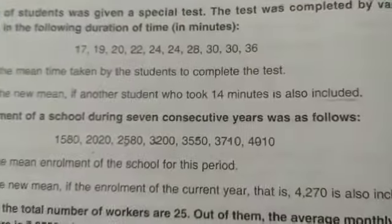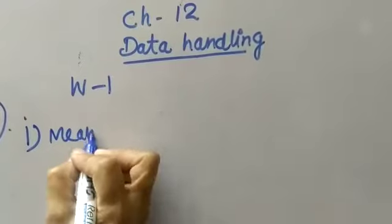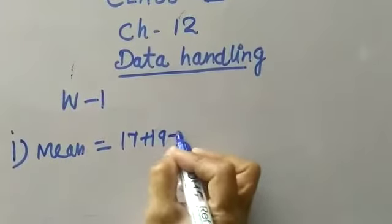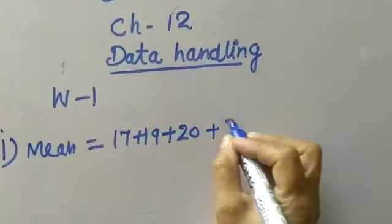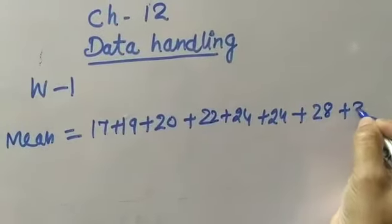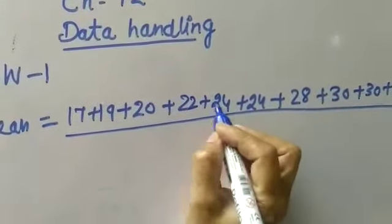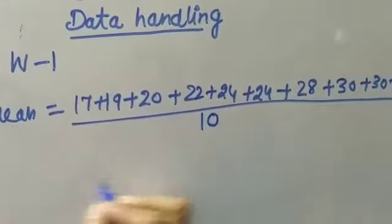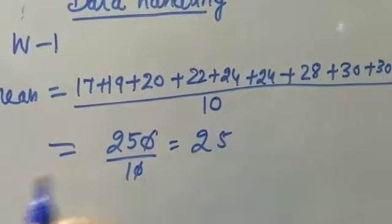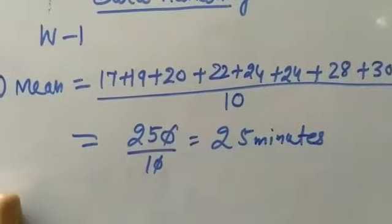Duration of time in which test was completed. You have to find the mean time taken by students to complete the test. Given: 17 plus 19 plus 20 plus 22 plus 24 plus 24 plus 28 plus 30 plus 30 plus 36. Count how many numbers - 1, 2, 3, 4, 5, 6, 7, 8, 9, 10. Total numbers are 10. Adding these, you get 250 upon 10. After cutting, you will get 25 minutes. Average is 25 minutes.